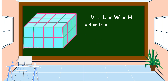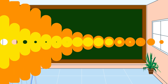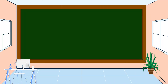In this example, the length is four units, the width is three units, and the height is two units. Four units times three units equals 12 square units, times two units — the volume equals 24 cubic units. The unit of measurement for volume is cubic units. I hope you understand our lesson for today. Thank you for watching.